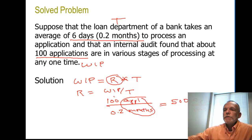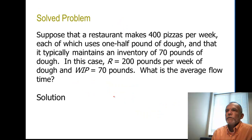This last one that we're solving, we're asked to find the average flow time. And let's see what we're given: 400 pizzas per week, each of which uses one half pound of dough, and an inventory of 70 pounds of dough.